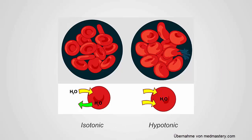This can be seen in the body when the plasma becomes hypotonic and the red cells become relatively hypertonic. Water rushes into the cells, causing them to swell, and if it's severe enough, the cells can rupture, causing hemolysis. This is a result of osmosis drawing water from a low concentration to a high concentration.